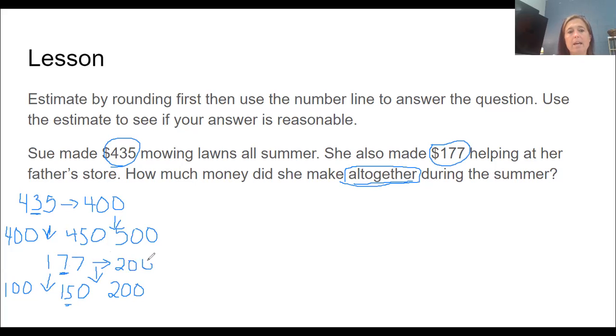If we add 400 and 200, we get 600. So if we do 400 plus 200, we get 600. So that is our estimate. So if our answer is not in or around 600, we know that we don't have a reasonable answer. So let's do our number line to add these two numbers together.